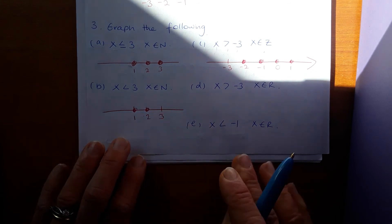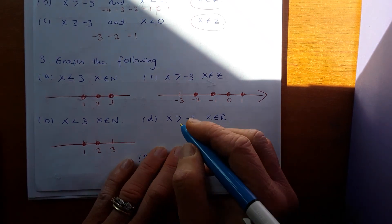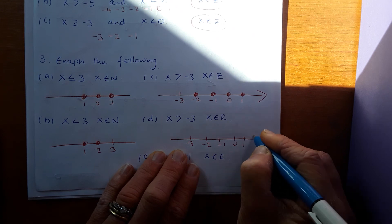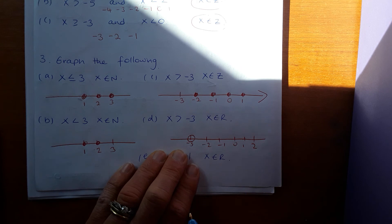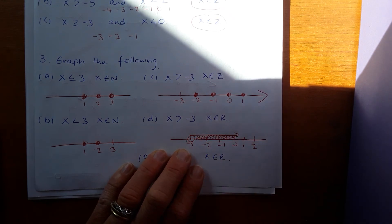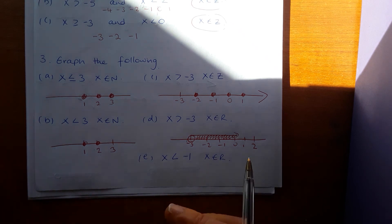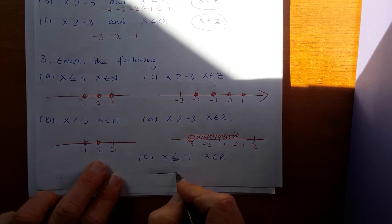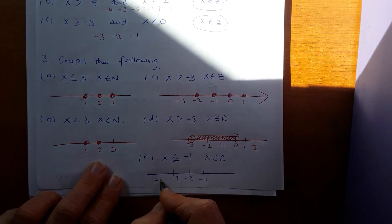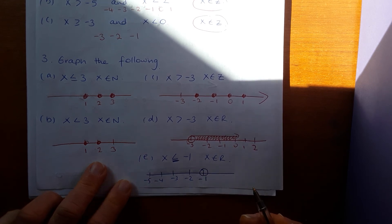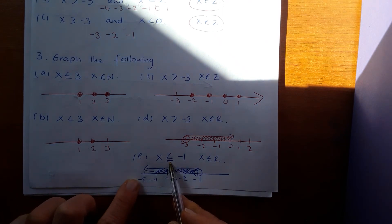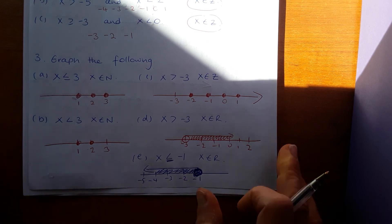x less than three, natural number: positive whole numbers only, so dots at two and one — not at three because it's less than, not equal to. No negative numbers. x greater than minus three, real numbers: decimals and fractions included, thick line going up from just above minus three. It does not include minus three, so open circle at minus three. If x less than or equal to minus one, real numbers: thick line going down, shaded circle at minus one because it's equal to.